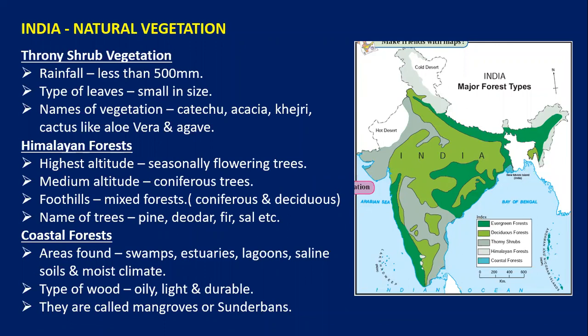Then we have coastal forest, found in areas of high rainfall — wherever you find swamps, estuaries, lagoons, or saline soil. These are also called mangroves. In India, they are found in the Sundarbans in West Bengal. The characteristic of the wood here is that it is oily, light, and durable — unlike evergreen forest wood which is hardwood, heavy, and durable.